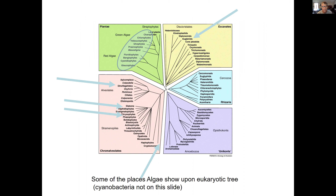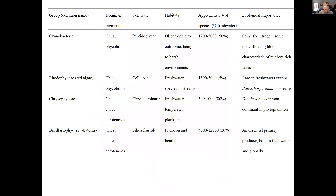There are other divergent groups around the tree that are also considered algae, and we'll see these in upcoming slides. The taxonomic method for determining what different groups are is based on the dominant pigments, their cell wall composition, and some of their habitats.